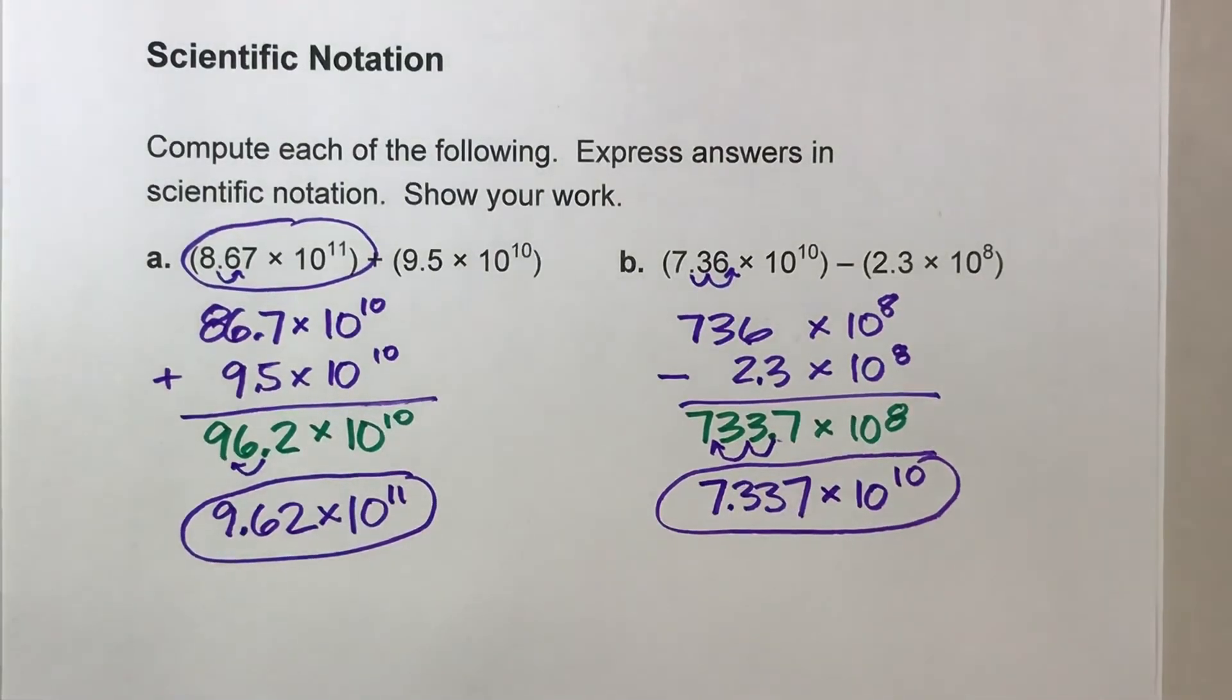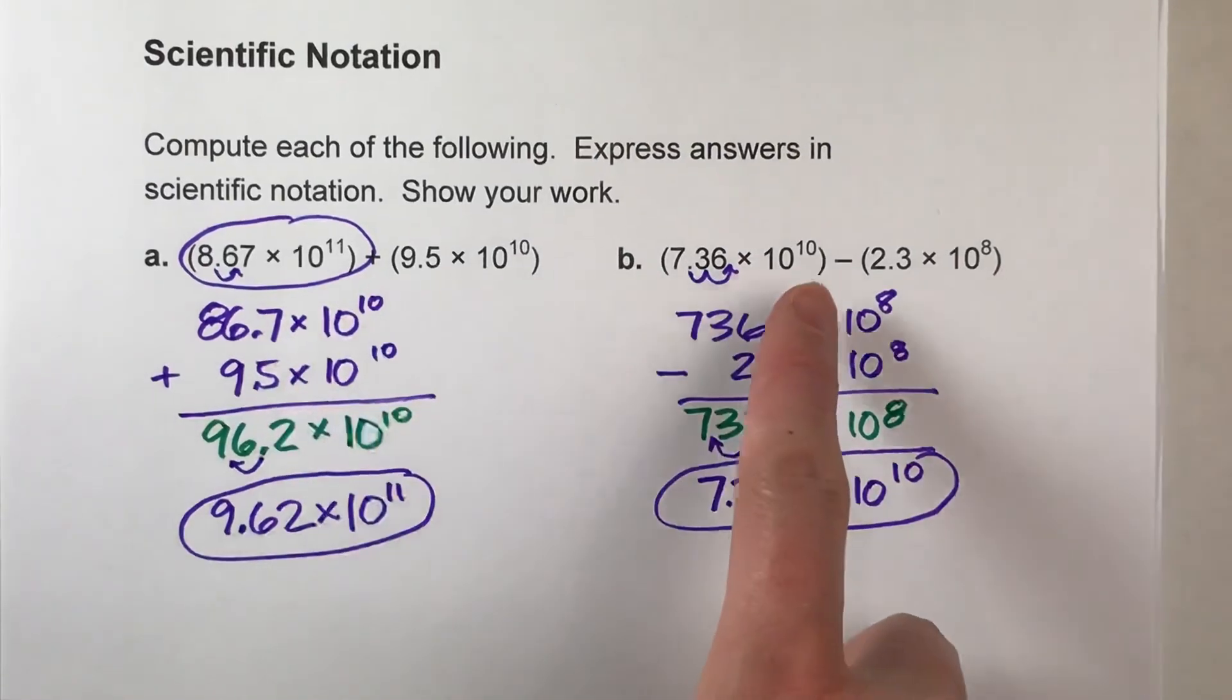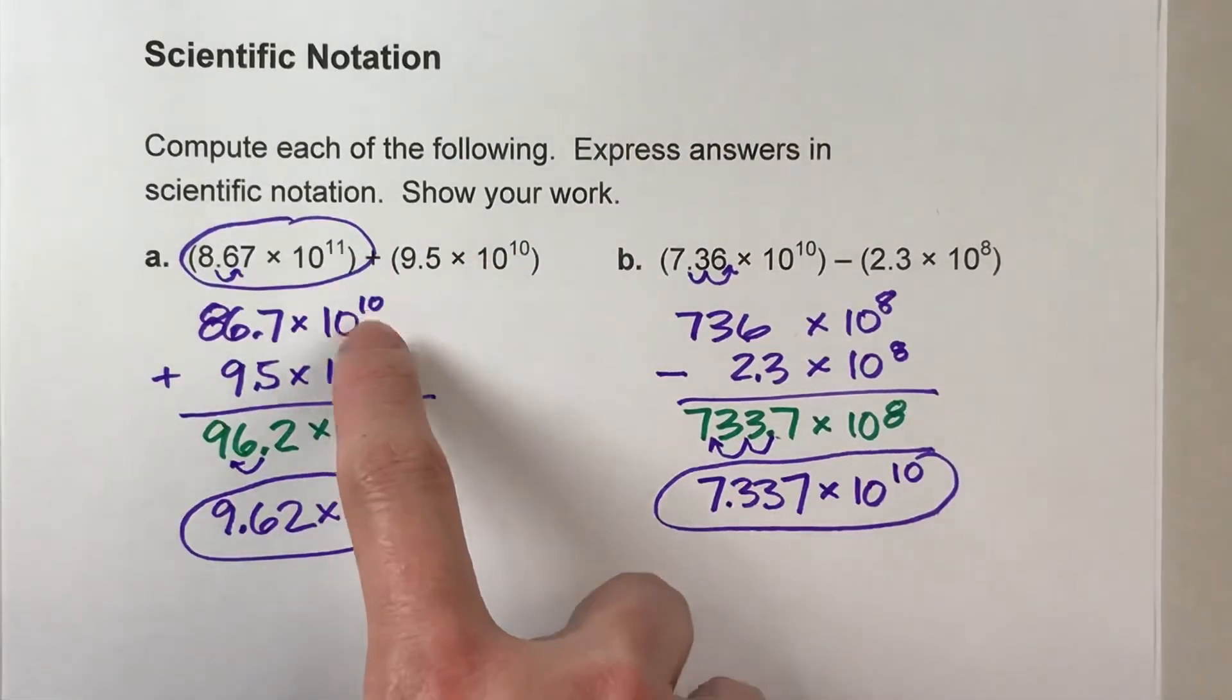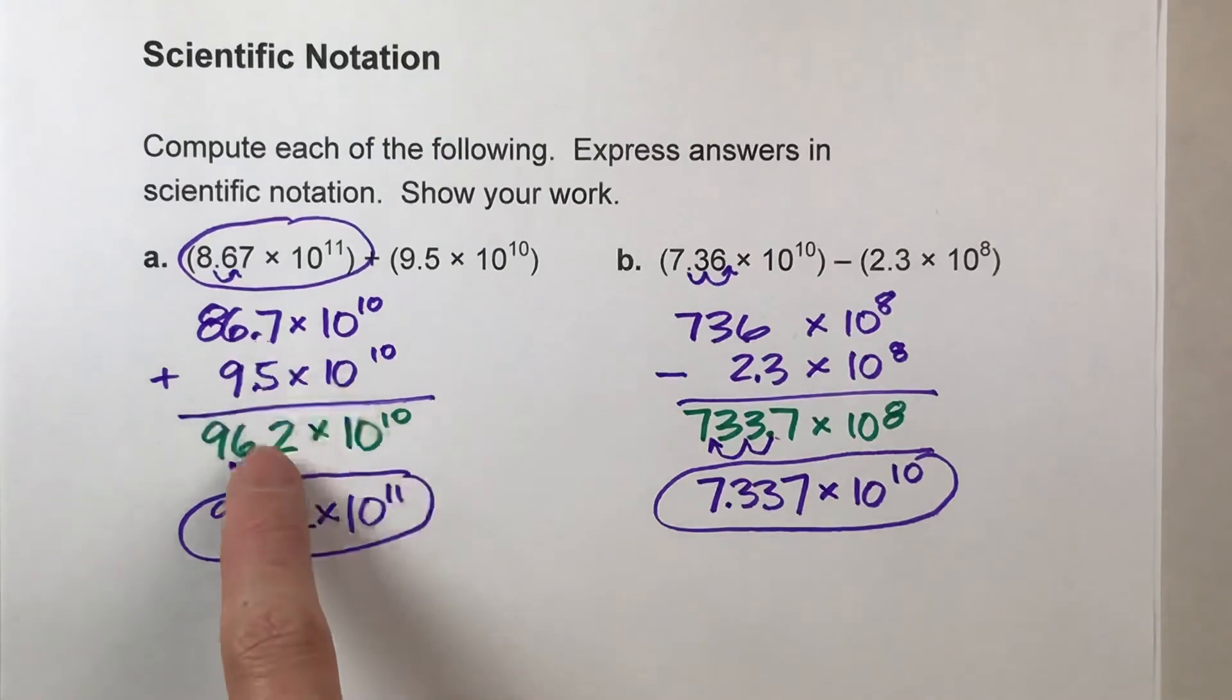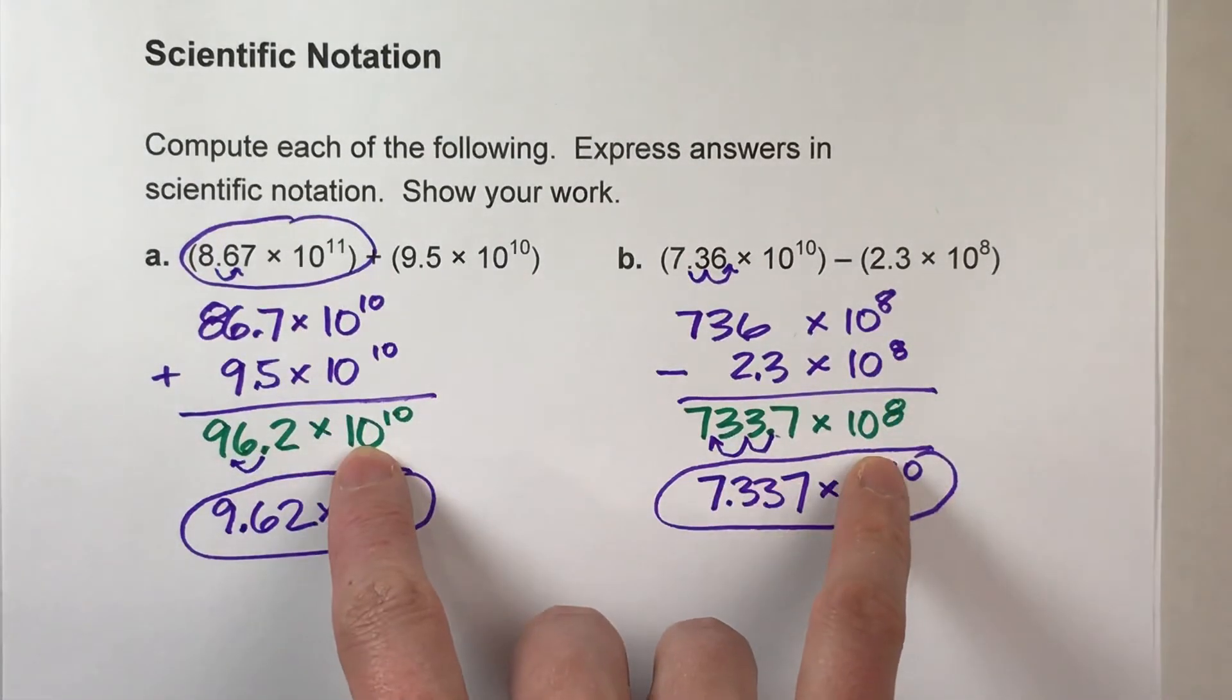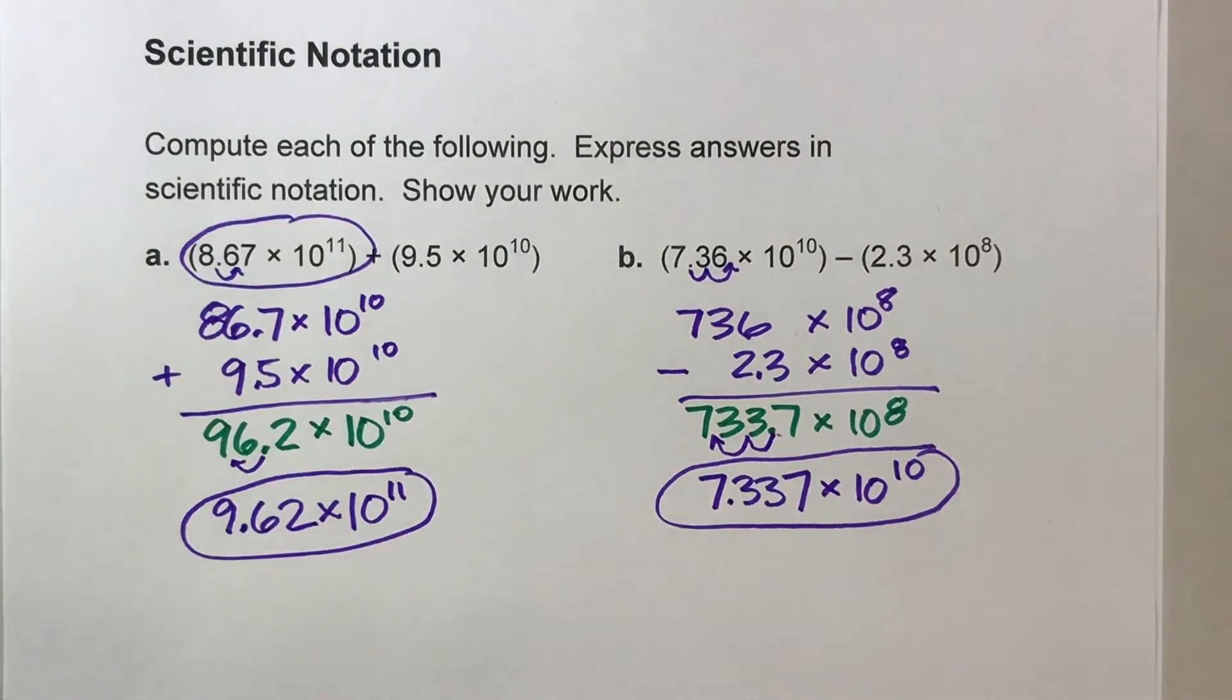So the key steps are, when you're adding or subtracting numbers in scientific notation, we have to have the same power of 10 before we can add them or subtract them. And then remember after you add the coefficients, the power of 10s don't change. They stay there. And make sure your final answer gets adjusted back to scientific notation.